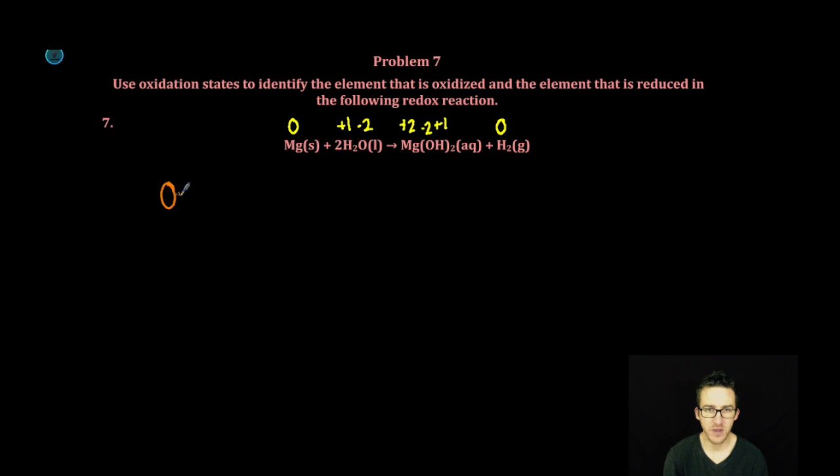So as we think about what thing has been oxidized or has lost electrons, that title goes to magnesium. Notice that it has gone from a zero oxidation state to a plus two oxidation state. It must have lost, you guessed it, two electrons.